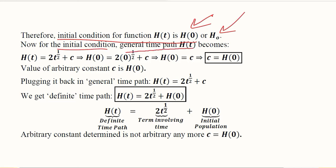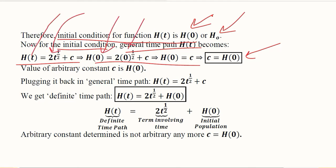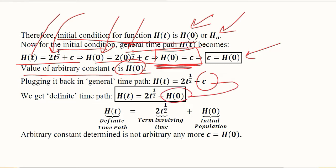We put t equal to 0, and the general time path becomes the definite time path. Wherever we have t we put 0, and doing so gives us c equal to h₀ — that is the constant value. The arbitrary constant is now evaluated and has a certain value, h₀. We put this value of c back into the general solution, and now h₀ appears instead of c.